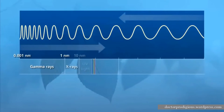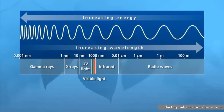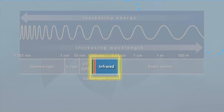The electromagnetic spectrum is composed of thousands of wavelengths arbitrarily divided into six spectral ranges. In entomology, visible and infrared are the most common spectral ranges associated with insect injury.